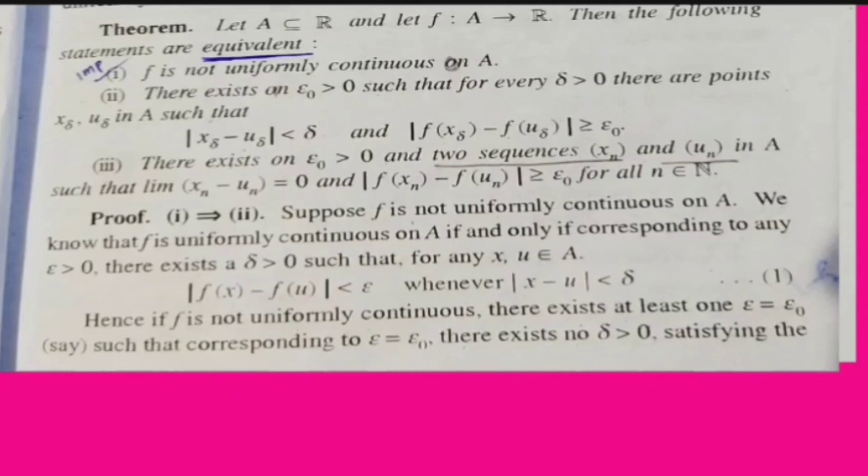F1 is uniformly continuous. If f1 is not uniformly continuous, then there exists at least one epsilon-not. There exists a corresponding delta, and no delta greater than 0 satisfying the condition.